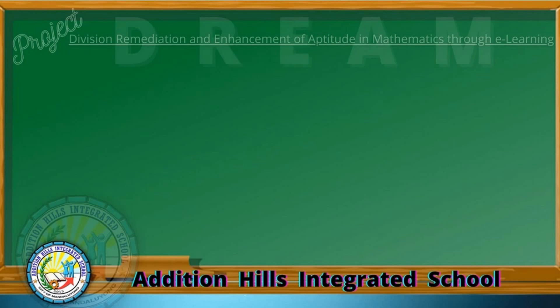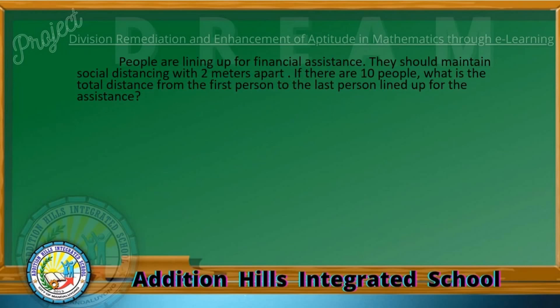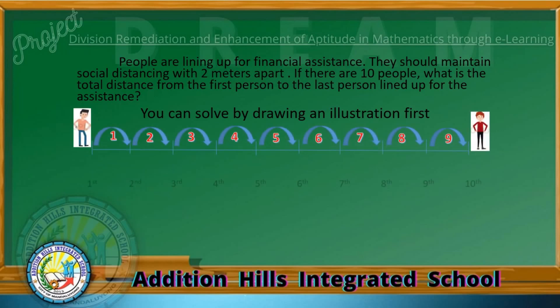Sample non-routine problem: People are lining up for financial assistance. They should maintain social distancing with 2 meters apart. If there are 10 people, what is the total distance from the first person to the last person? You can solve by drawing an illustration first. Since there are 9 spaces between the first and last person, multiply 9 by 2 to get 18 meters.